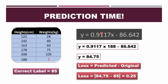Using these values and putting them into the equation: theta-1 is 0.9117 and theta-0 is negative 86.642. This is the equation of the line. So if the height of a person is 188 cm, what shall the weight be? I put 188 as x into the equation and get the result as 84.75 kg. The actual data in my table has the weight as 85 kg — the correct label is 85 kg and my model predicted 84.75 kg, just a difference of 0.25. This is known as loss, but it is pretty good — as close to zero as possible, so our model is doing well.